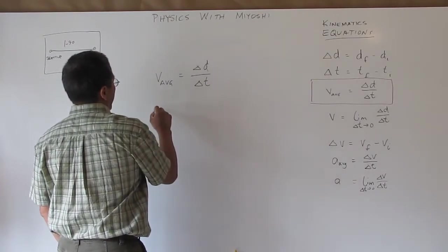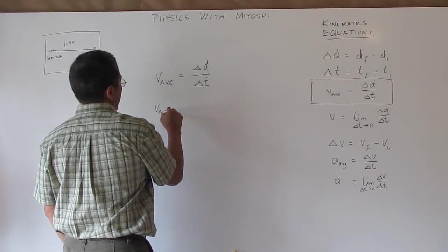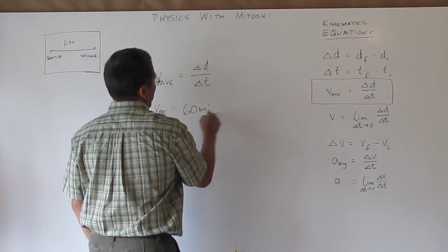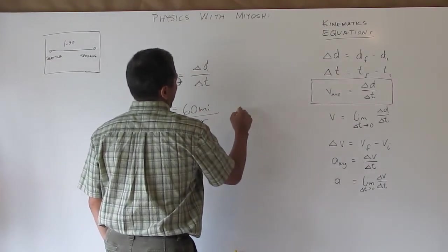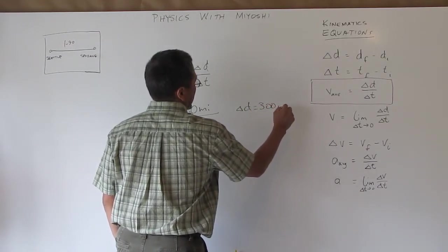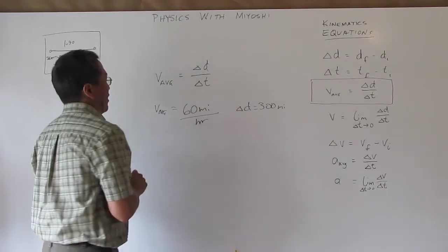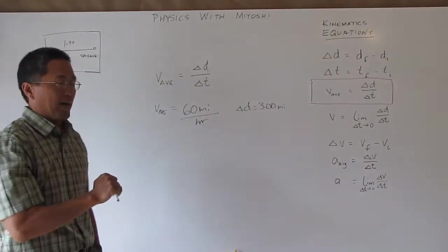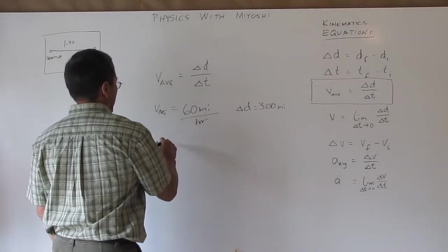So if I have my v average is 60 miles per hour and my delta D or my distance is still 300 miles but now I have a specific time I want to get there and a terminal time I have to leave by, I can just find my delta T.